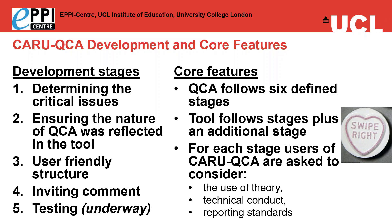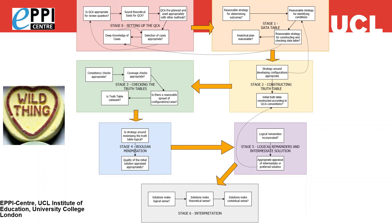QCA follows six defined stages, so the tool follows these stages plus incorporates an additional stage around setting up the review. For each stage, users of CARIQCA are asked to consider three aspects: the use of theory, which underpins all QCA analyses; the technical conduct, so whether the stage has been conducted appropriately; and whether the analysis is reported correctly — reporting standards. QCA is a complex, multi-stage process, and this is reflected in the design of the tool. We've got our six stages plus stage zero around setting up the QCA, and for each of these stages there are a number of questions that we want reviewers to consider.